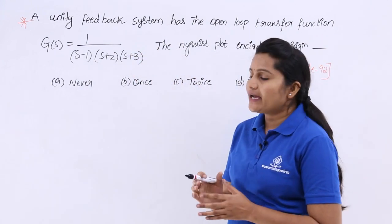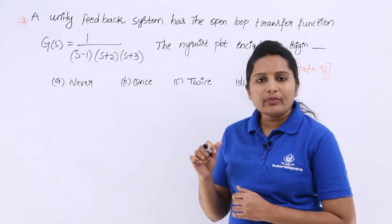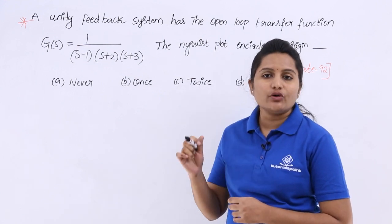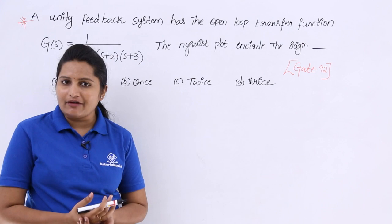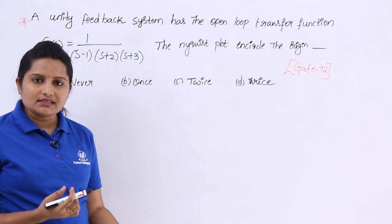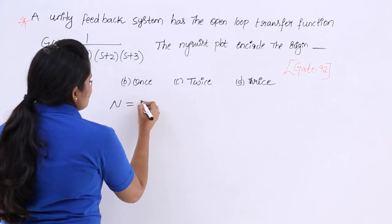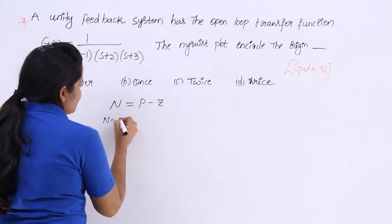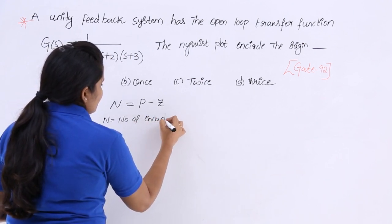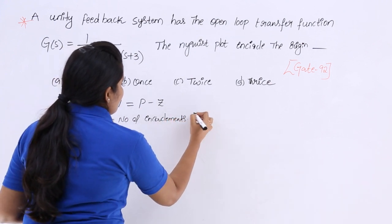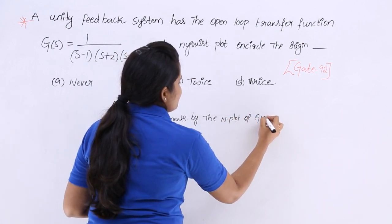For this unity feedback open-loop transfer function, we need to find how many times the Nyquist plot encircles the origin. We have a formula: the number of encirclements N equals poles minus zeros — specifically, N equals P minus Z, where N is the number of encirclements of the origin by the Nyquist plot of G(s)·H(s).